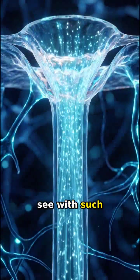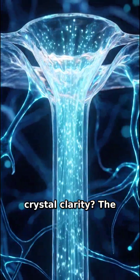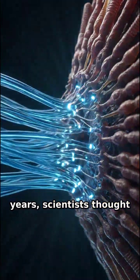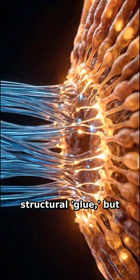So how do we see with such crystal clarity? The secret lies in special cells called Mueller glia. For years, scientists thought they were just structural glue, but they actually function as living fiber optic cables.